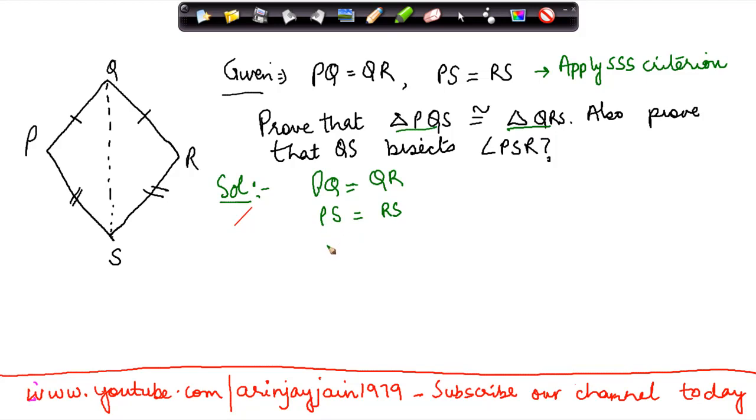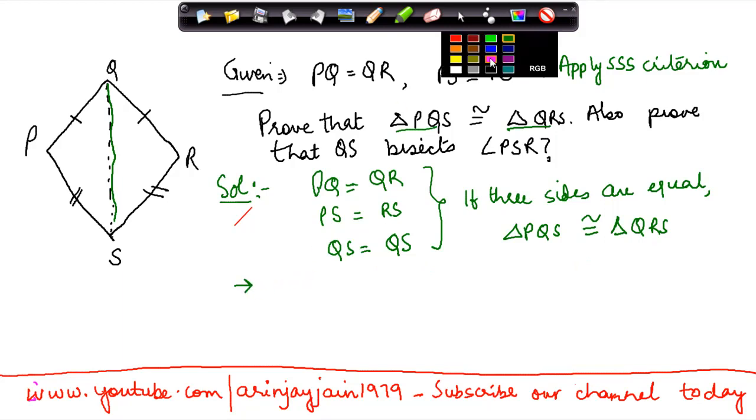Now which is the third side of angle PQS? The third side is QS, this line. And which is the third side of angle QRS? Again the third side is QS only. And by implication, if it's the same side it has to be equal. Therefore if three sides are equal, triangle PQS is congruent to triangle QRS. Hence proved.